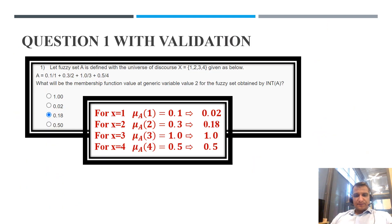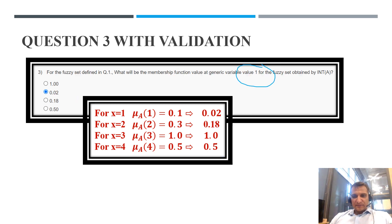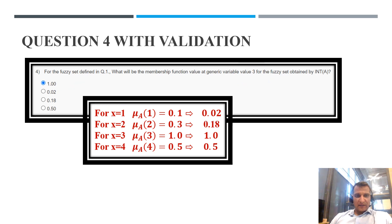Question 1: the membership function value at generic variable 2 — option C is correct. For generic variable 4, the new membership value equals 0.5, so option C. Question 3: generic variable 1 has new membership value 0.02, so option B is correct. Question 4 answer is 0.5.